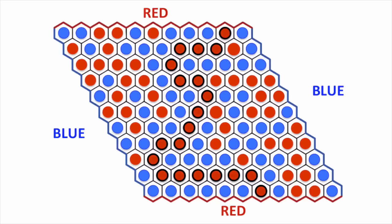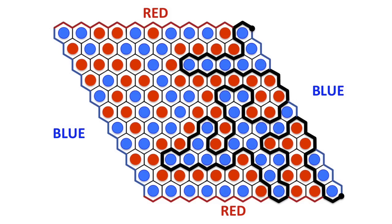Because the black chain goes from one corner to another, this means that there is a path of hexagons that wins for one player.